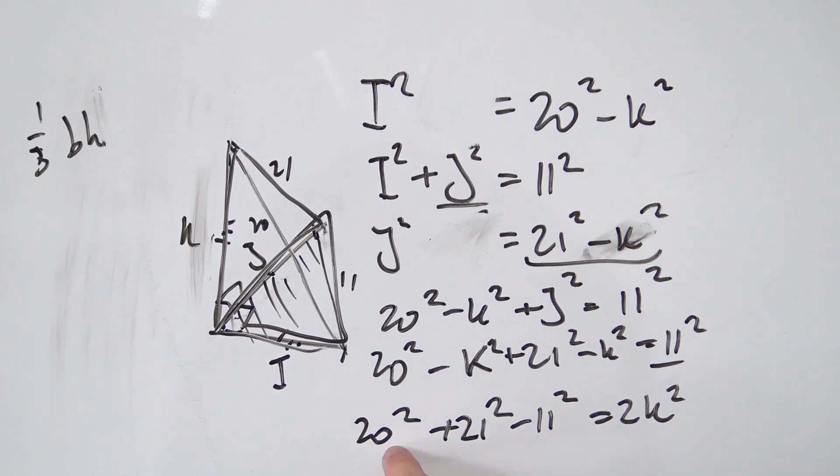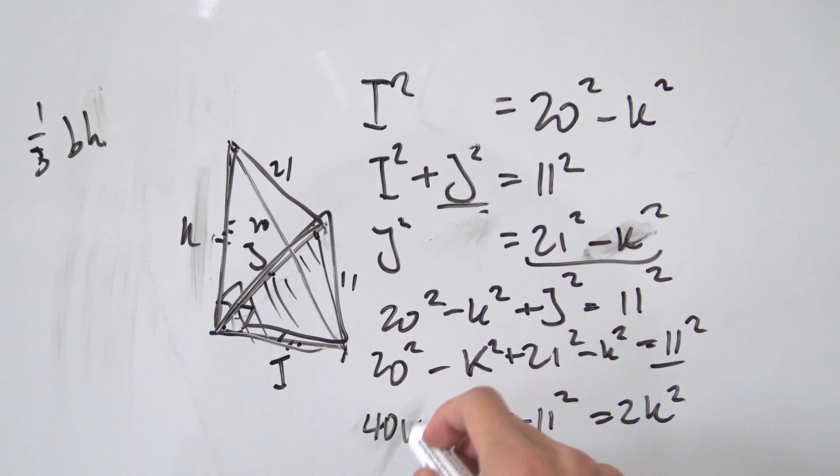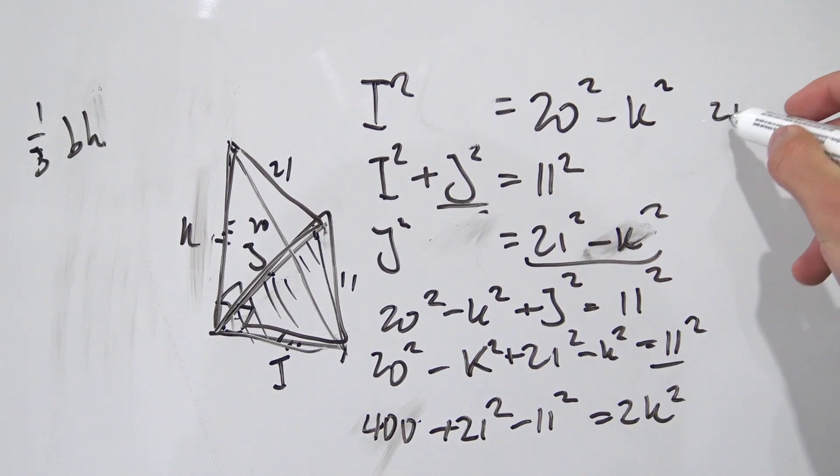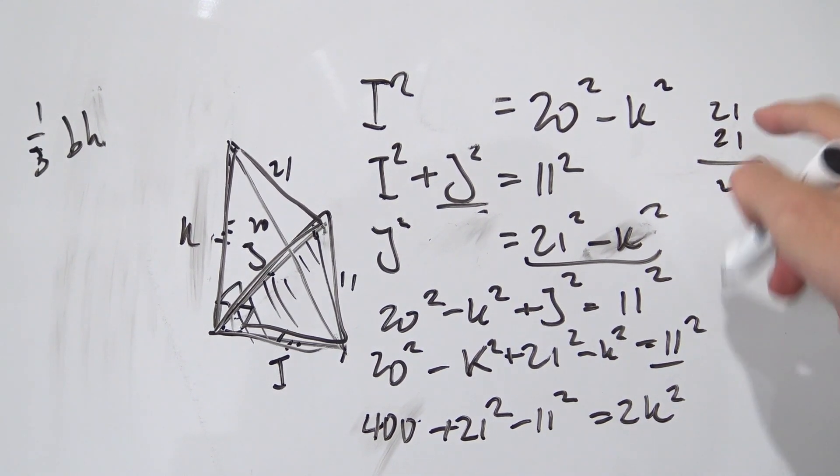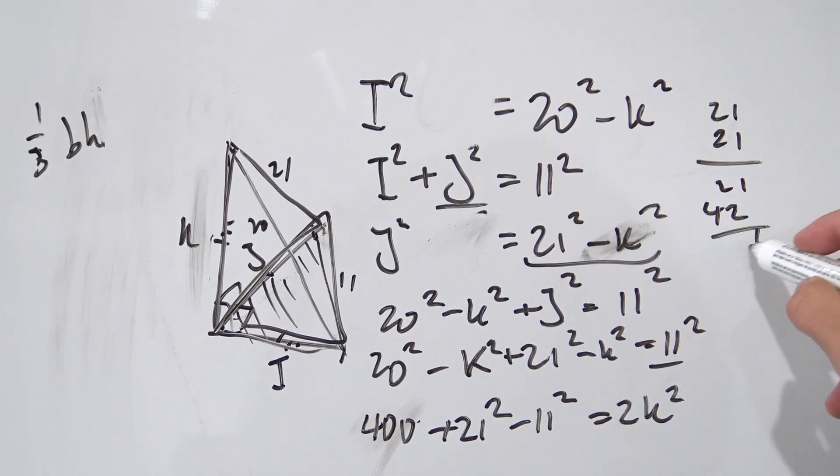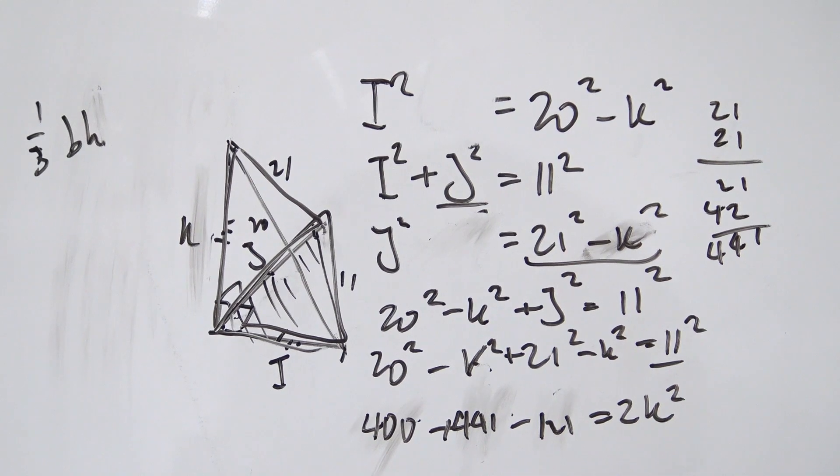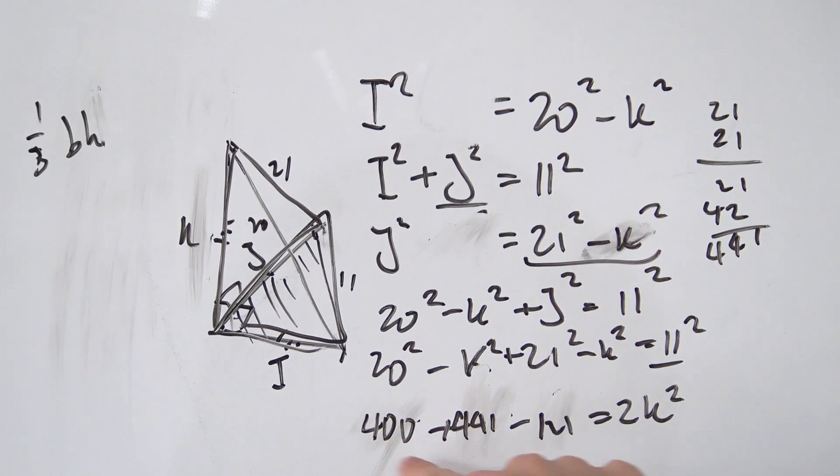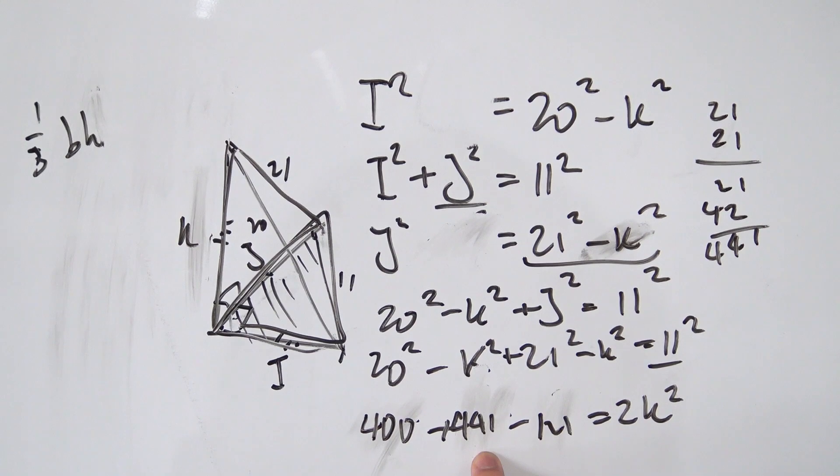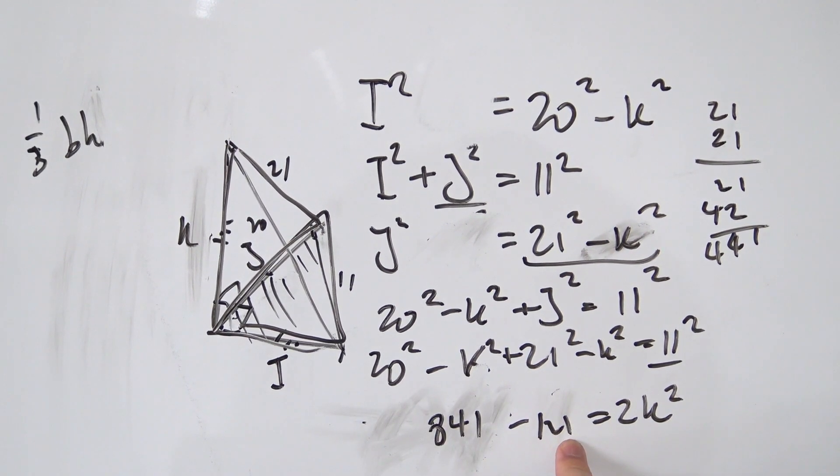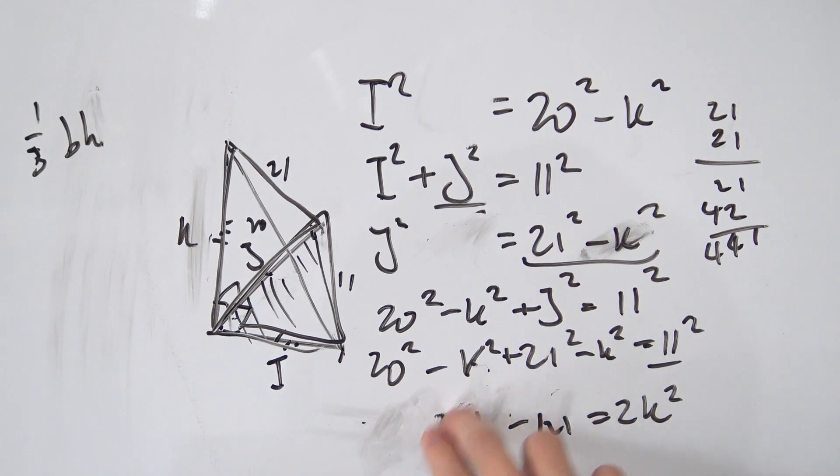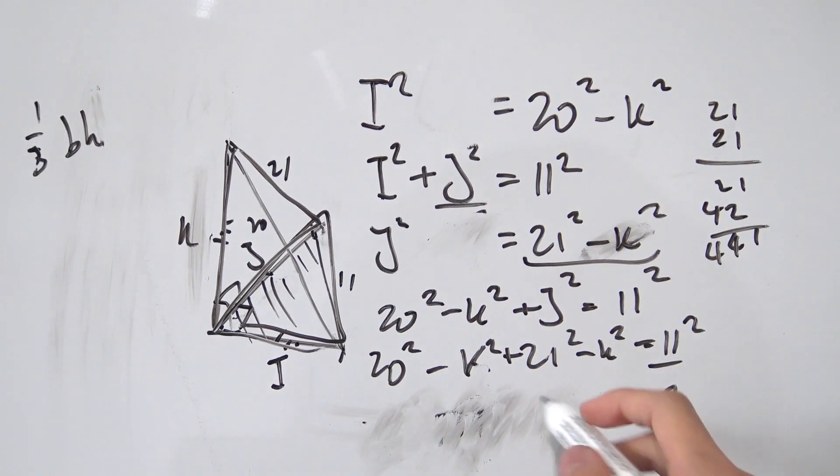Okay, what can we do from here? Let's actually evaluate these three values right here. So we're going to have 20 squared. That's exactly 400. 21 squared. I don't know it from the top of my head. So let's just do some multiplication. So 21 times 1, that's 21. 21 times 2, that's 42. So 441. And then 11 squared. That's exactly 121. Okay, let's do some arithmetic now. So 400 plus 441, that's 841. And then we're going to subtract 121. That should be exactly 720. So all of this is 720.